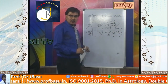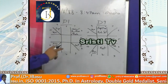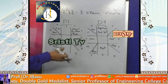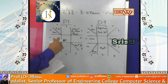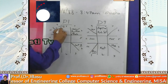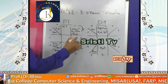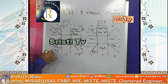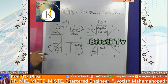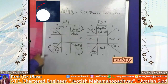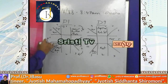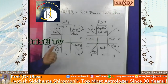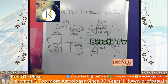I didn't draw the Bhav chart separately here, but for this native the planets are getting the efficacy of different Bhavs. Jupiter is getting the effect of the 8th Bhav. Mars is getting the effect of the 6th Bhav. Saturn is getting the effect of the 3rd Bhav. Mercury is getting the effect of the 4th Bhav, in spite of being placed in the ascendant. Saturn and Rahu are getting the effect of the 11th Bhav. Now let's see what diseases this native will face in his or her life.